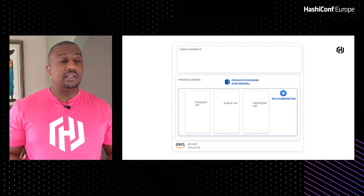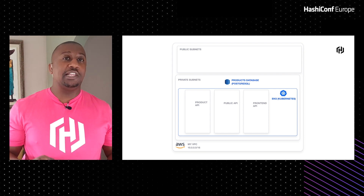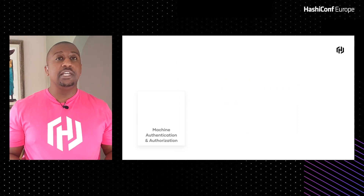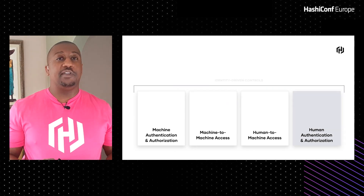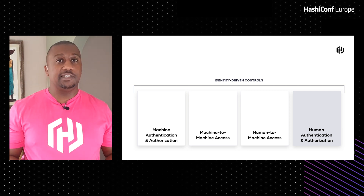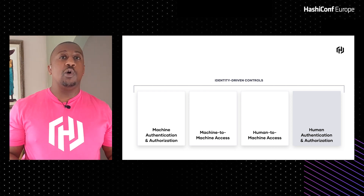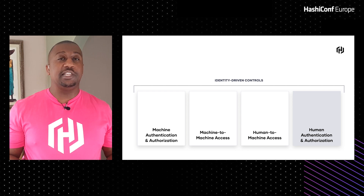Now we're going to take this architecture and start to put the building blocks of a zero-trust approach onto it. In order to verify everything, the core building block is going to be identity. Everything we're going to do is centered around the machine's identity or the human identity, and we can split this up into four different areas.